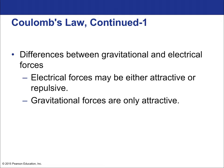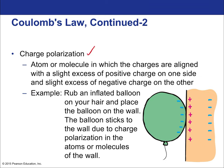There's something called charge polarization. An atom or molecule in which the charges are aligned with a slight excess of positive charge on one side and negative on the other is called a polarized atom or molecule—it has a positive pole and a negative pole. Charge polarization is most pronounced in insulators. An example is when you rub an inflated balloon on your hair and place it on the wall—it sticks due to charge polarization in the wall's atoms.